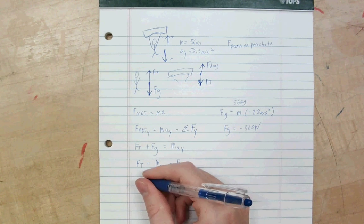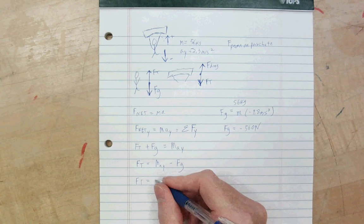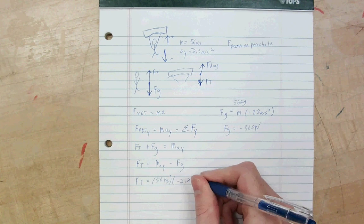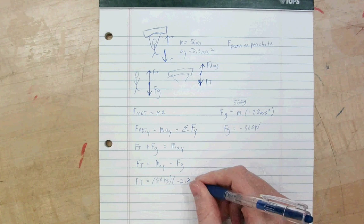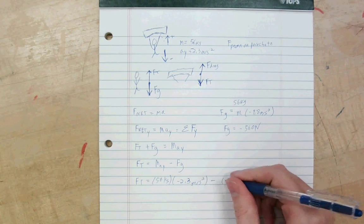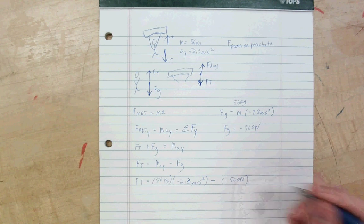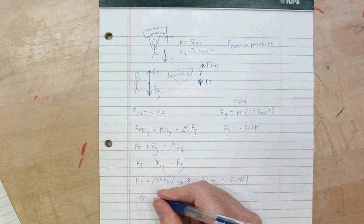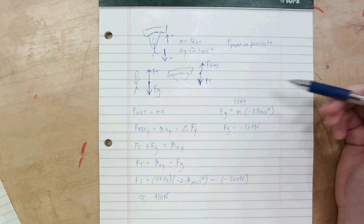All right. Then I'm ready to go here. F t equals 56 kilograms. The person's mass is negative 2.3 meters per second squared. The acceleration minus negative 560 Newtons. And, if I do out that math, I get about a 430 Newton force.